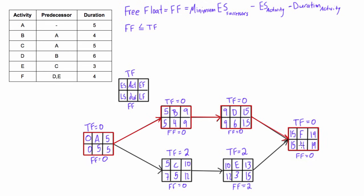But free float has nothing to do with the end date of the project. Free float is the amount of time you can delay an activity without delaying the earliest start of any succeeding activity. For activity E, if we delay it by two days we start on day 12 and end on day 15, and we're not affecting the early start of activity F. That's why activity E has a free float of two — we can delay it by up to two days before affecting the early start of any succeeding activity.